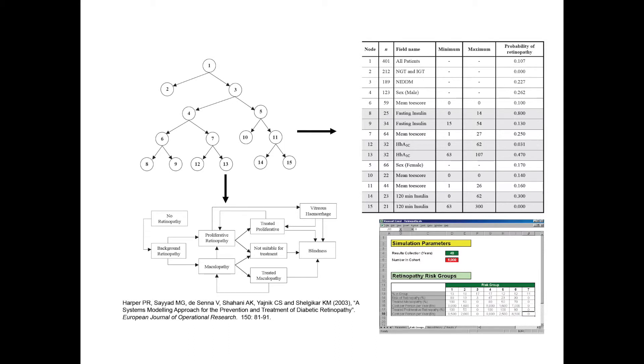Briefly, here is an example I worked on concerning diabetic retinopathy with a Wellcome Trust study and collaborators in India. CART is used to produce a tree to predict the overall probability of onset of diabetic retinopathy, which leads to blindness. And for example, for an overall 10% chance of developing retinopathy, we have found some groups with as much as 80% chance of developing the condition.